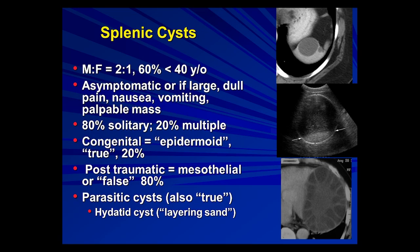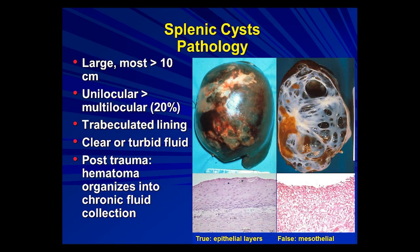One of the most common things we see incidentally on cross-sectional imaging is splenic cysts. Basically there are two types: congenital and post-traumatic — it's thought that most are post-traumatic. In endemic areas, echinococcal cysts have a unique appearance. Even if a cyst is congenital, it can develop hemorrhage within it after trauma. You can't really tell whether a cyst is congenital or acquired from looking at it, but microscopically the congenital ones have an epithelial layer while the false or post-traumatic cysts have a nonspecific mesothelial layer.